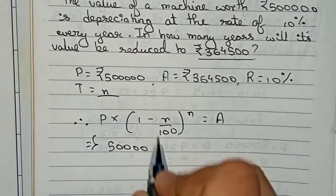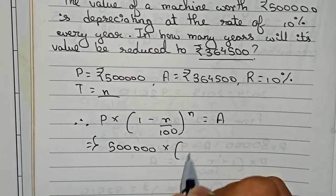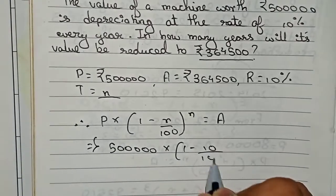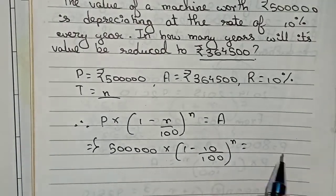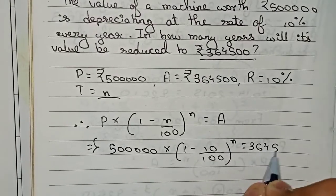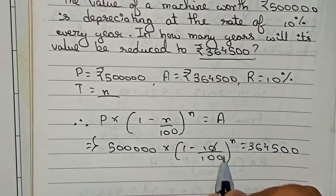The principal is 5 lakh times (1 minus 10/100) to the power n equals the amount, which is 3,64,500. Here we cancel the zeros first.